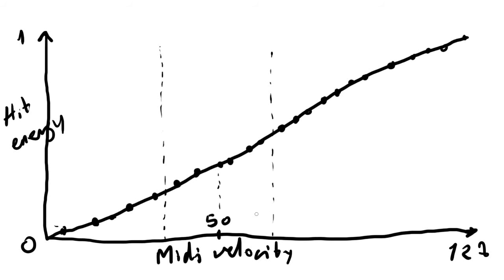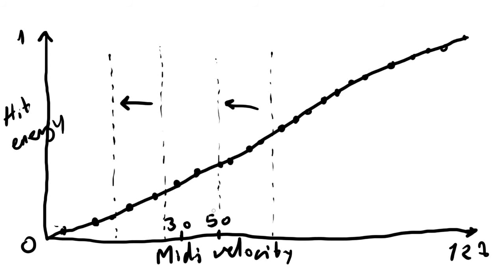The group is defined by the MIDI velocity. So if we have a MIDI velocity at 30, suddenly the group will also move with the hit — like so. It moves like this. So now the group is defined around 30 instead, having four samples to choose from.